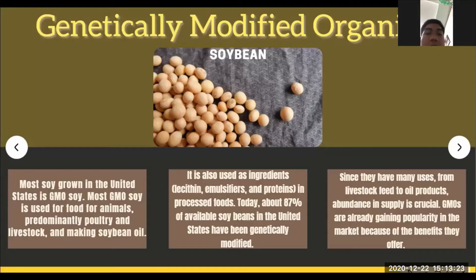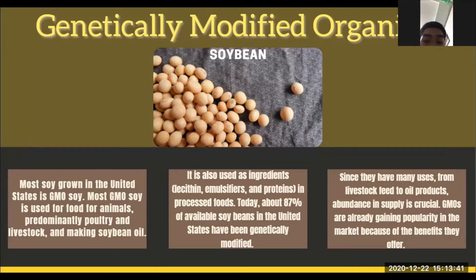For our GMO example: soybean. Most soy grown in the United States is GMO soy. Most GMO soy is used as food for animals, predominantly poultry and livestock, and for making soybean oil. It is also used as ingredients such as lecithin, emulsifiers, and proteins in processed foods.